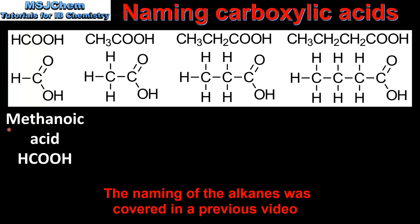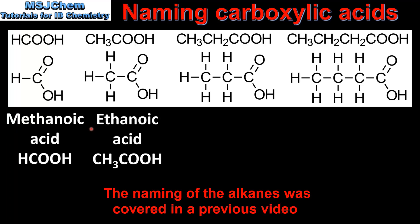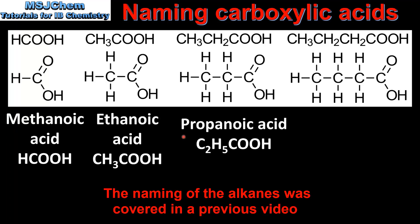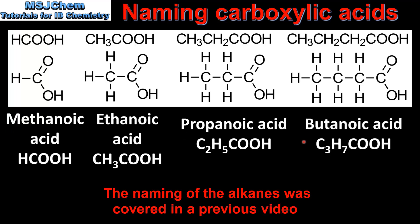The first example on the left, with one carbon atom, is methanoic acid. With two carbon atoms we have ethanoic acid. With three carbon atoms we have propanoic acid. And with four carbon atoms we have butanoic acid.